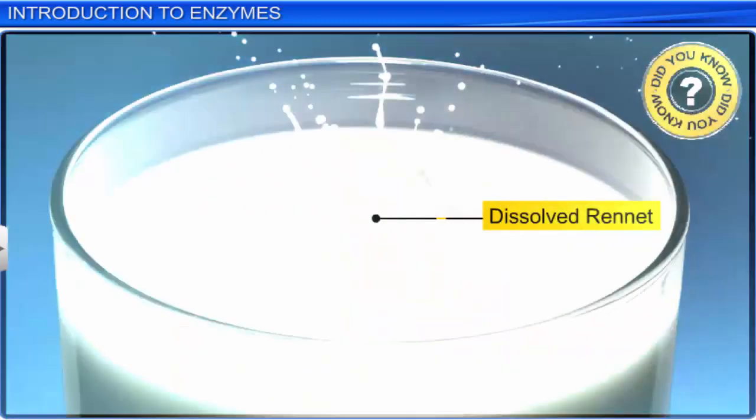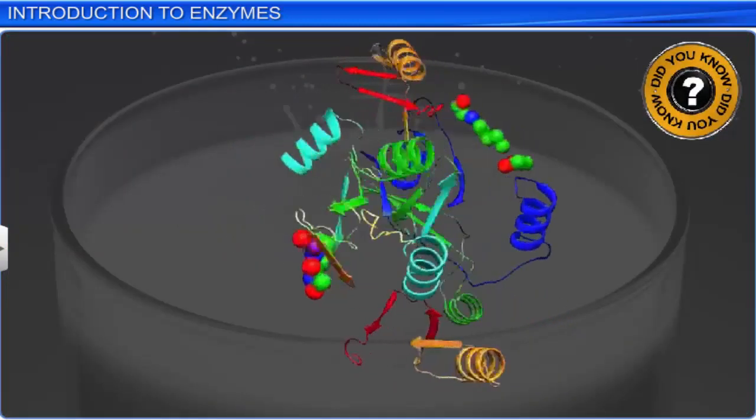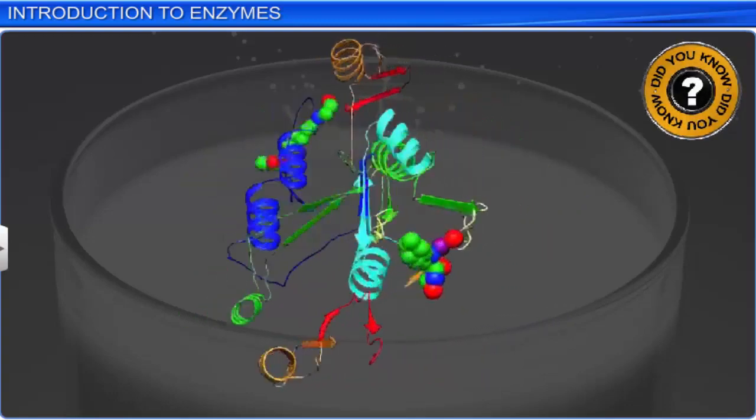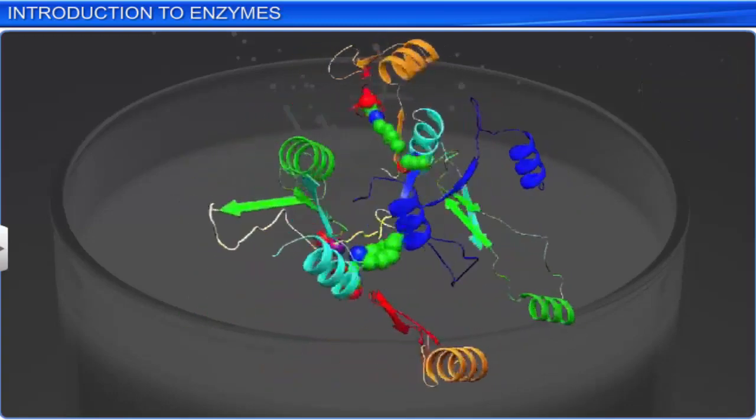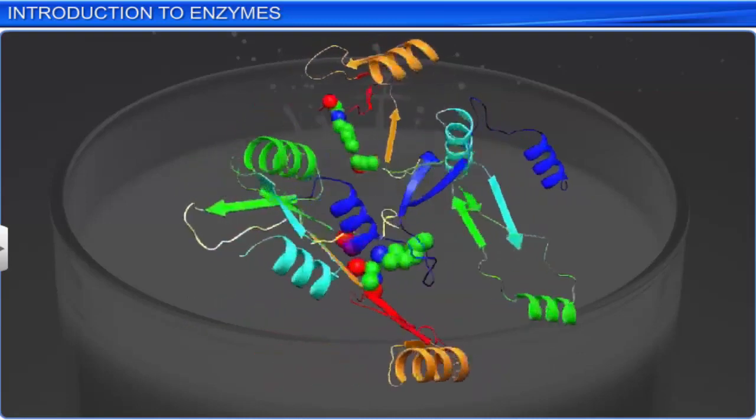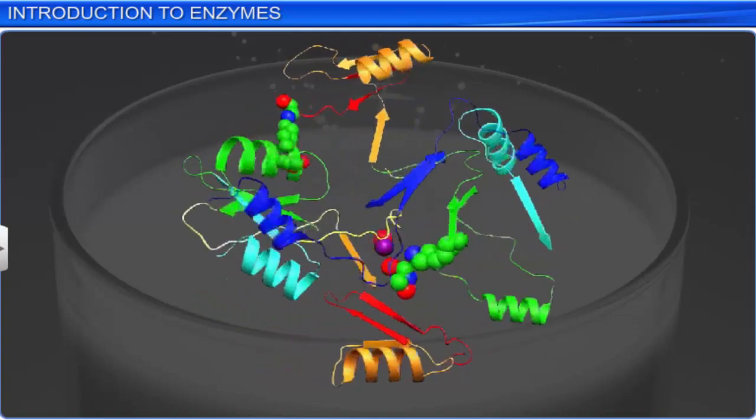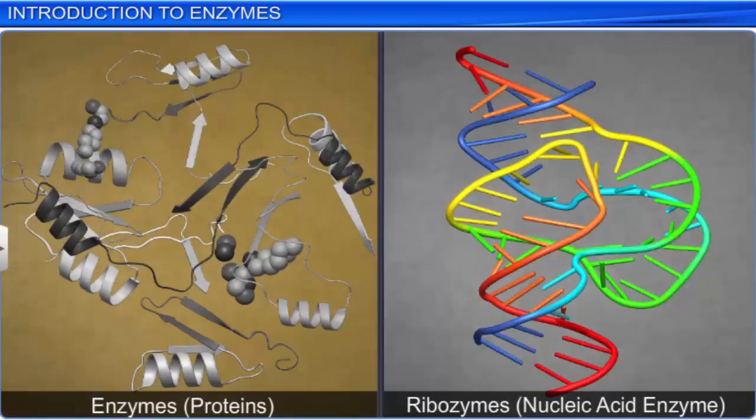Did you know that cheese is produced with the help of rennet, which is a natural complex of many enzymes? Enzymes act as biological catalysts in a living system, and change the rate of reactions without themselves getting altered. While most enzymes are proteins, some nucleic acids also behave like enzymes. These nucleic acids are called ribozymes.